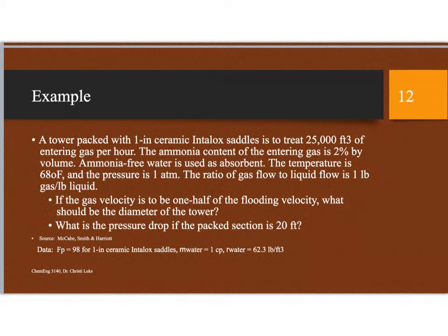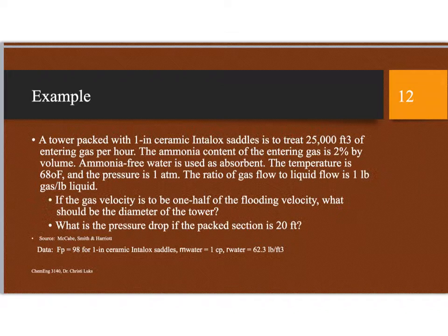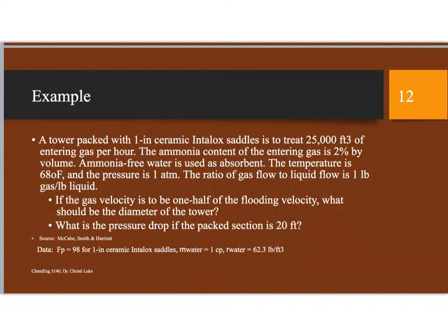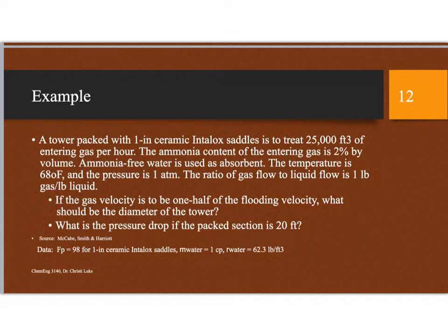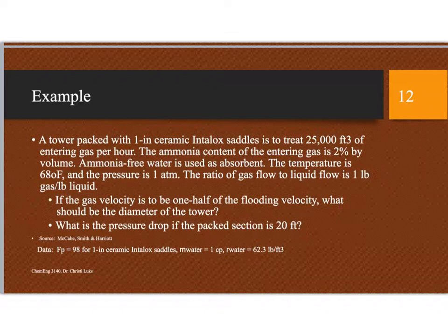So we have a tower packed with one inch ceramic Intelox saddles. We're going to treat 25,000 cubic feet of gas per hour. The ammonia content of the entering gas is 2% by volume. Ammonia free water will be used as the absorbent. The temperature is 68 degrees Fahrenheit. The pressure is 1 atmosphere. The ratio of gas flow to liquid flow is 1 pound of gas per pound of liquid.